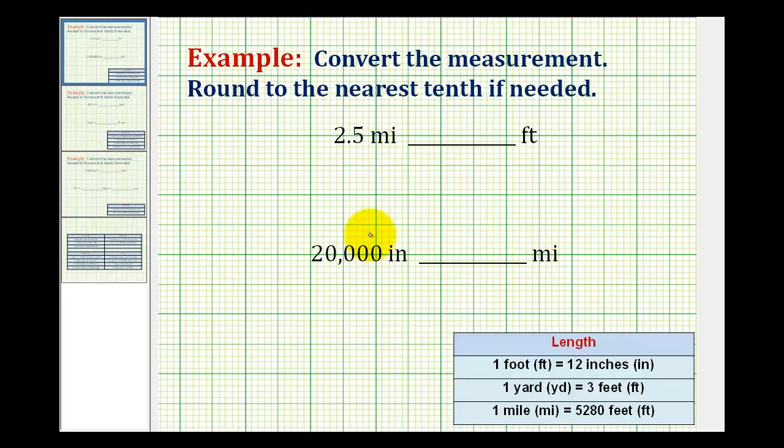We want to convert the following lengths using the standard measurement system. We either need to be familiar with these conversions or have a table to reference. To do these conversions, we're going to multiply by what's called a unit fraction. A unit fraction is a fraction that's equal to one but has different units in the numerator and denominator.